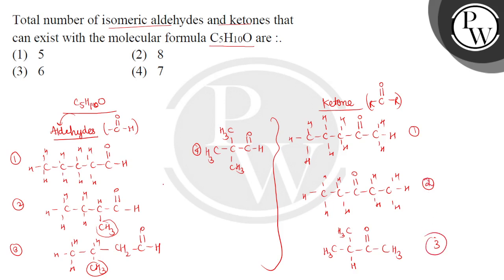In total, we can make 4 aldehyde structures and 3 ketone structures. What is the total? 4 plus 3 equals 7. So 7 possible isomeric structures of aldehydes and ketones can be made.